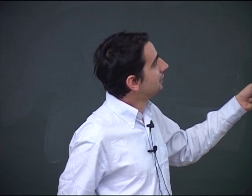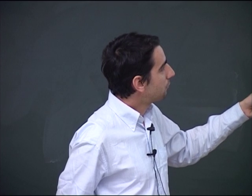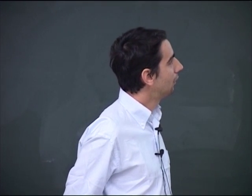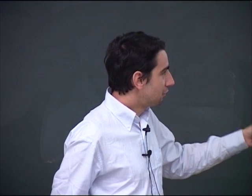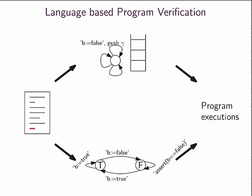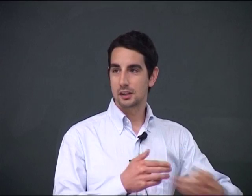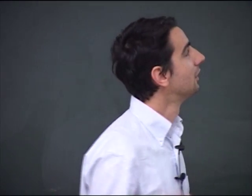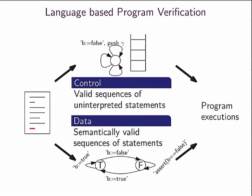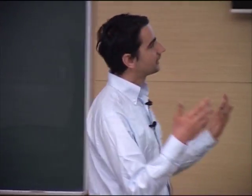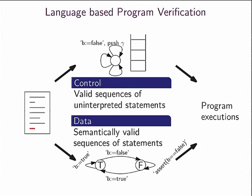In this approach, you extract a pushdown automaton for the control of the program, and you extract a finite state automaton that speaks about the data of the program. For the control, we have basically the valid sequences of statements, but you don't interpret them. The finite state automaton will restrict, among those sequences of uninterpreted statements, those which are semantically valid. By taking the intersection of those two, you obtain the program execution.